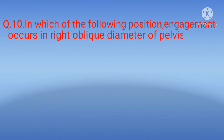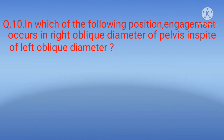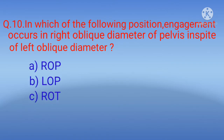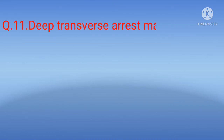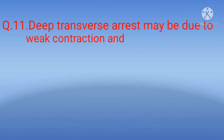Question 10: In which of the following positions does engagement occur in the right oblique diameter of the pelvis instead of the left oblique diameter? Options: A) ROP, B) LOP, C) ROT, D) DOP. The correct option is A) ROP — right occiput posterior.